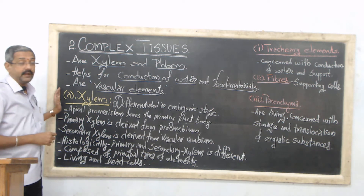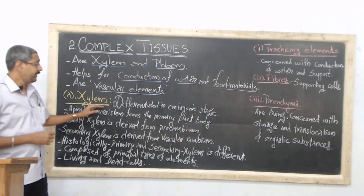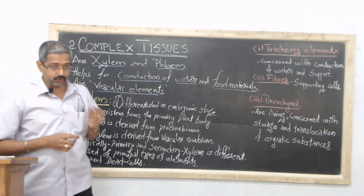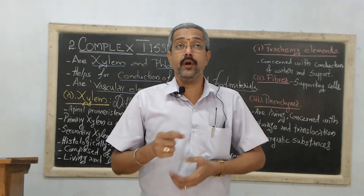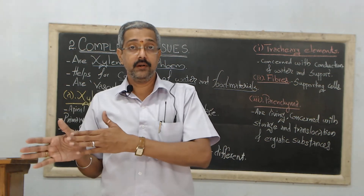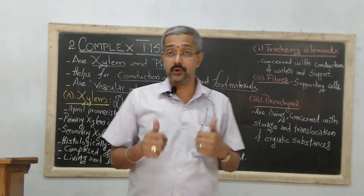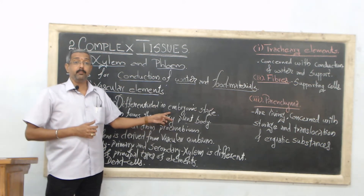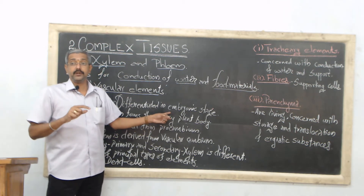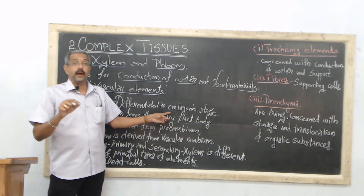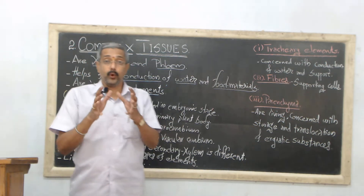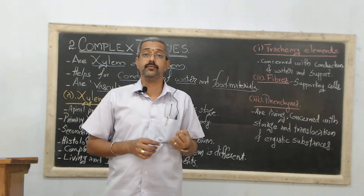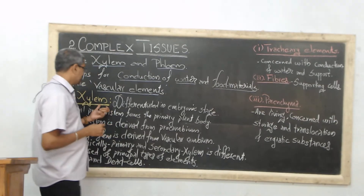Coming to the first type — xylem. Xylem elements are differentiated in the embryonic stage itself. From xylem we know it has embryonic cells which start multiplication, deriving first the radicle or plumule, and later the root and shoot. While the embryo starts germination, the radicle comes out from the seed and comes in direct contact with the soil, where conduction of moisture, water content, and minerals absorbed from the soil is performed by xylem.